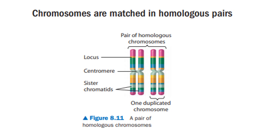At the start of interphase, every chromosome has a single chromatid, so every gene has two alleles. But at the end of interphase, due to DNA replication, every chromosome has two chromatids — or you can say one pair of homologous chromosomes has four chromatids. So every gene has four alleles. And after cell division, each cell will get two alleles of a single gene.